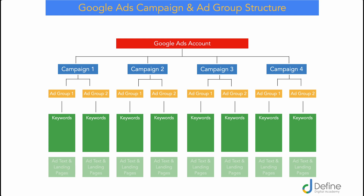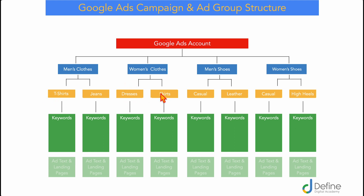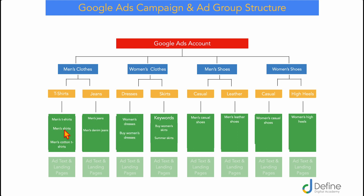Under each ad group you have your one keyword theme going to individual ad copies and landing pages. For example, if you're marketing an online clothing store, your campaigns would be around men's clothes, women's clothes, men's shoes, and women's shoes. In the men's campaign your ad groups would cover t-shirts and jeans, with others for jumpers, suit jackets, or trousers. For women's clothes you'd have dresses and skirts, and you can follow the same process for men's and women's shoes.